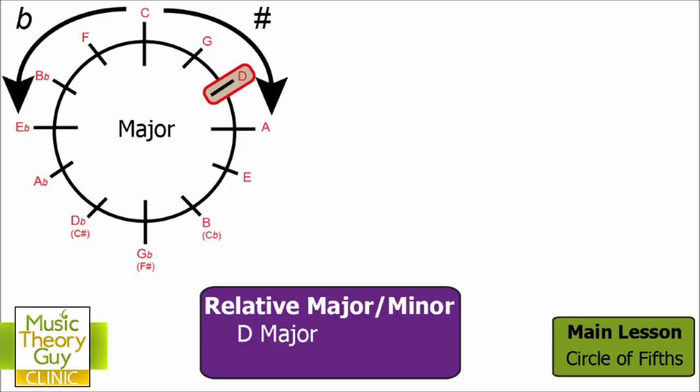Now because we've counted 2 to the D and it's on the sharp side of the circle, we can say that D major has got two sharps in its key signature. And as you can see, I've made a note of that, those two sharps at the bottom of the screen. It's really important we remember that D major has got two sharps in it.